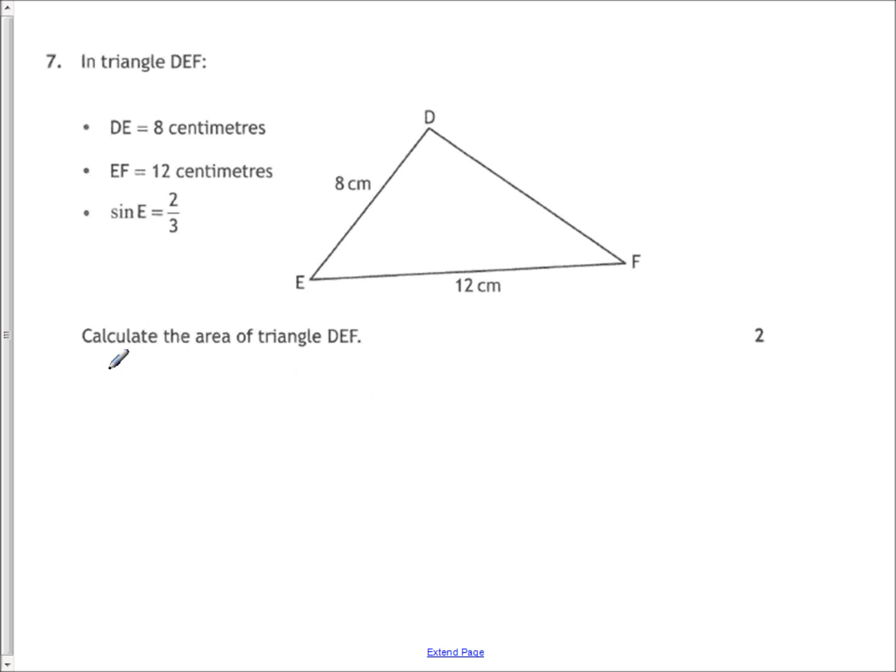Calculate the area of the triangle. Well, there's only one thing you can do. Area equals half AB sine C. Now, you're told that you've got these two sides. So to find the area of a triangle, you want an angle sandwich. You're told that sine E is two thirds. So you've got your two sides, and you've got sine of the angle in between. So you've got all the ingredients you need, and that's two marks. That itself tells you how straightforward the question is, that it's only worth two marks.